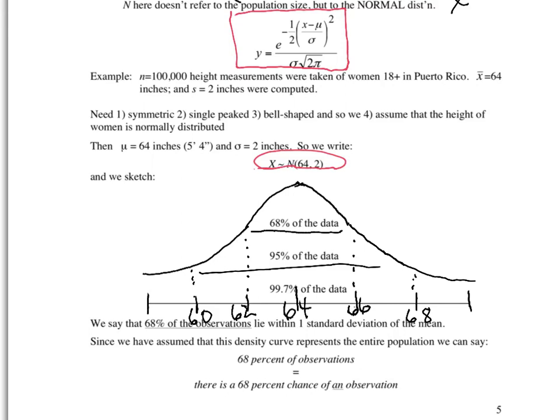And so 95% of the observations lie within 60 and 68. So what do we say? If we were to select a woman at random in Puerto Rico, a woman 18 or over, the chances that her height was between 60 and 68 inches would be 95%. The chances that her height would be between 62 and 66 inches is 68%. And the chances that her height would be between 58 and 70 inches would be 99.7%. That is how we use the normal distribution to make predictions.